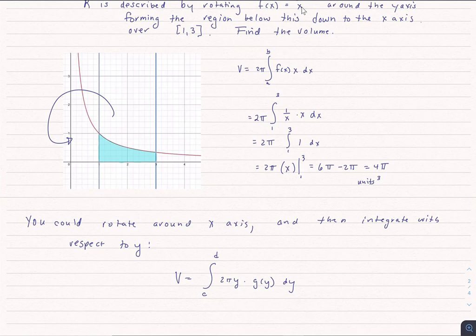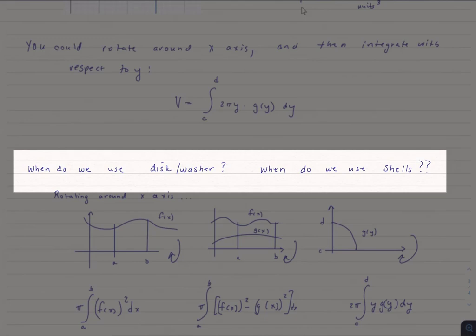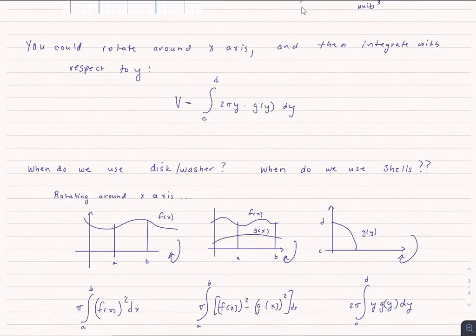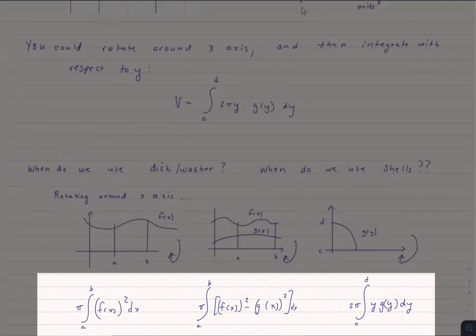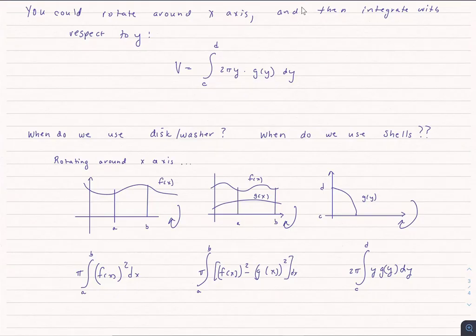That leads to this question. When do we use disk? When do we use shells? First of all, the difference between disk and washer, if you're going to have two separate lines, chances are you're going to be using the washer method because that means you're going to have a cavity inside. But if you're rotating around the x-axis, you've got three choices. You either have the disk method, the washer method, or shells. You've got the three equations here for each one of these. The question is, how do you know which one to use?